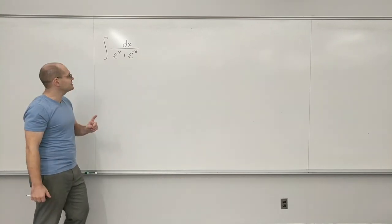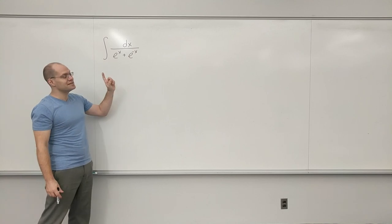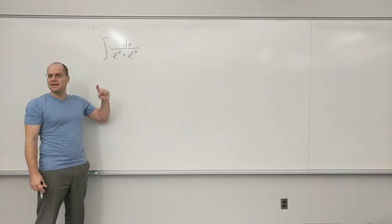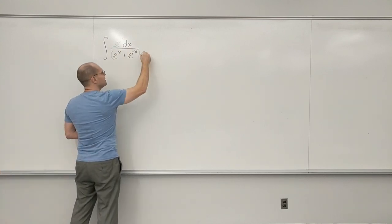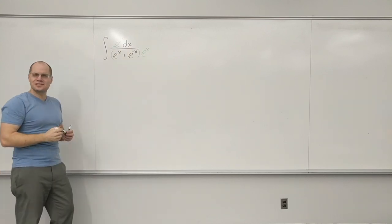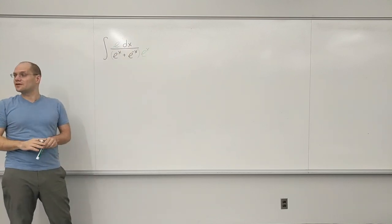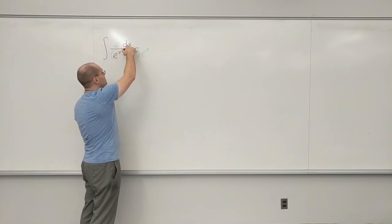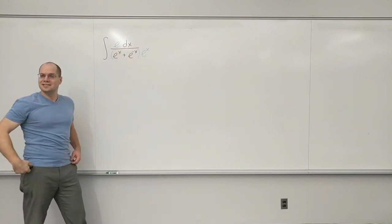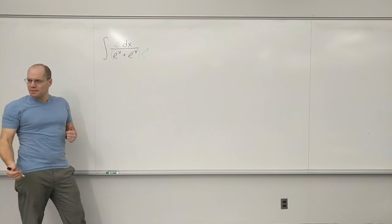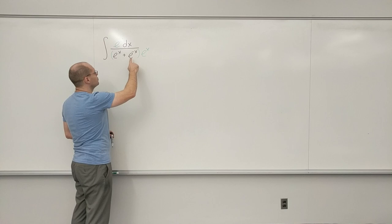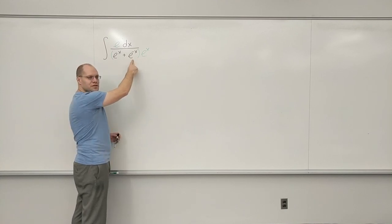So here, my next idea would be to multiply the top and the bottom by e to the x. Now, I'll do this in my head, and I'll ask myself, is it working? The nice thing about e to the x is that it can get absorbed into the d symbol. In other words, that's the substitution. And then what do I have on the bottom? u, u, 1 over u.